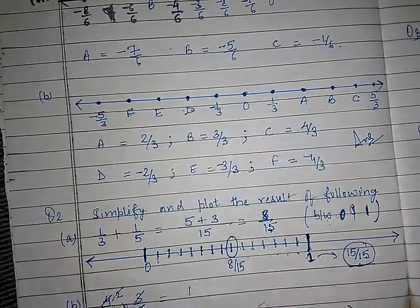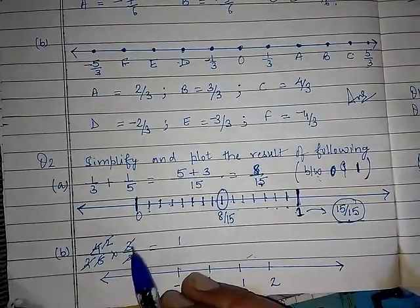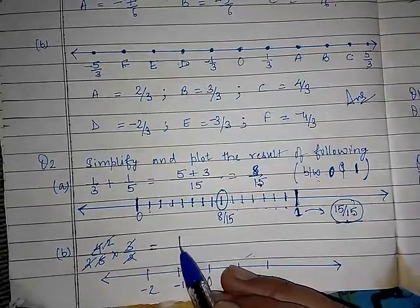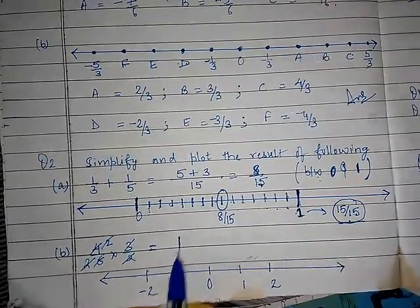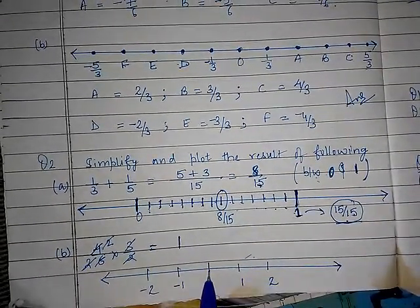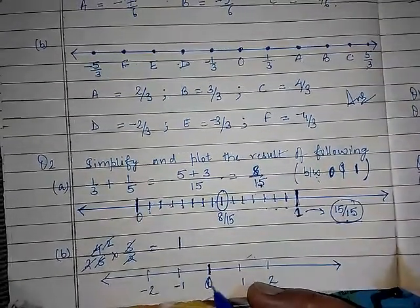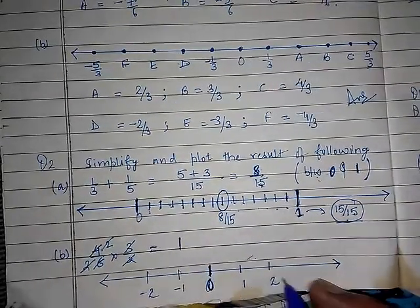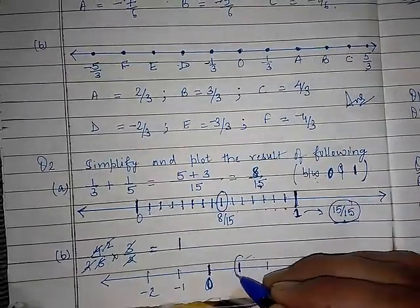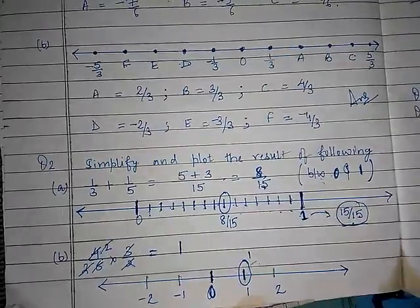Then come to Part B. It is given here: 4 upon 6 multiplied by 3 upon 2. Try to do the cancellation — after cancelling the terms, you will get the answer as 1. So 1 is very easy to represent on the number line. Draw a number line, mark 0 in the center — you know that on the number line the center is always 0. Before 0 are negative integers, after 0 are positive integers. So your 1 is here. Mark a circle and mention 1. That is your answer.